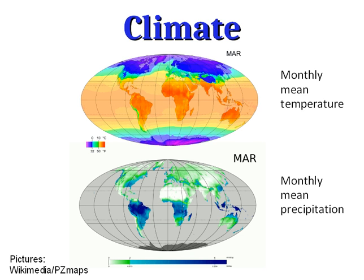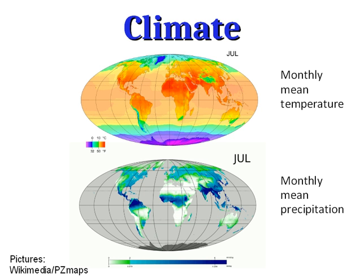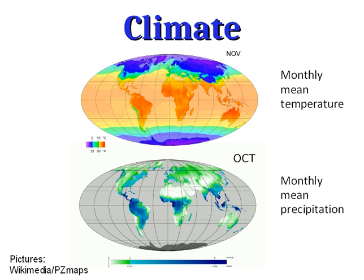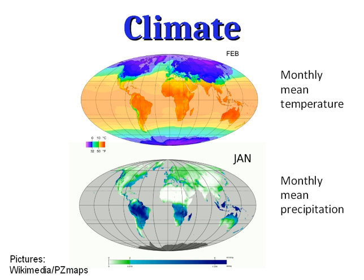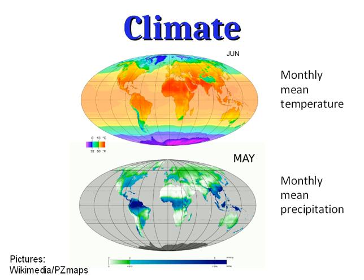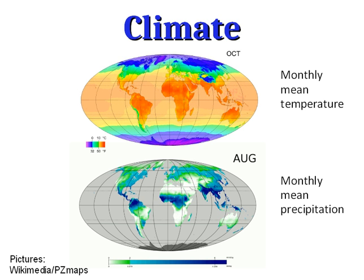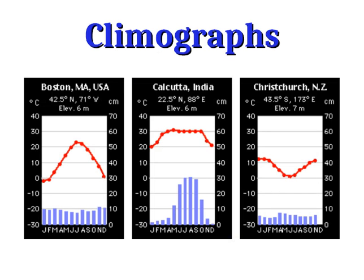We can describe the climate of any particular place by describing the average temperature for each month across the course of the year and the average precipitation for each month. In these two animated maps you see those temperatures and precipitation levels for various parts of the Earth over the course of a year. We can summarize these in something called a climograph. On a climograph, the line represents the average monthly temperature, and the bars represent the average monthly precipitation. Looking at the climograph for Boston, Massachusetts, we see that the temperature ranges from a little below freezing in winter up into the low 20s Celsius in summer.